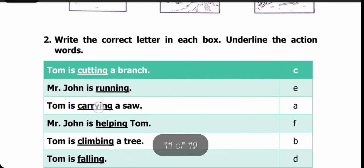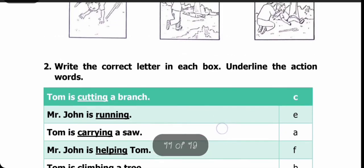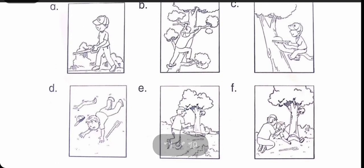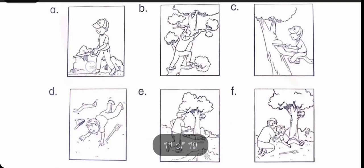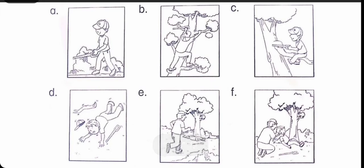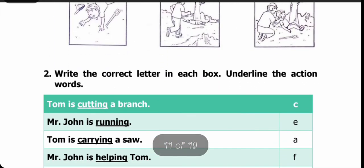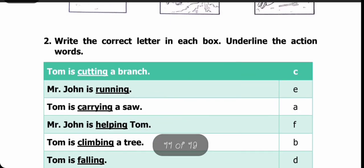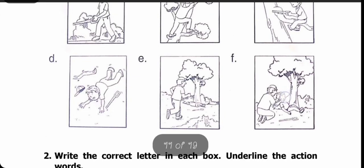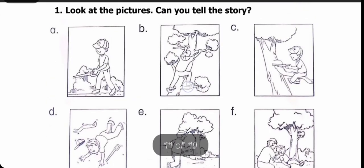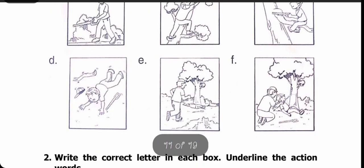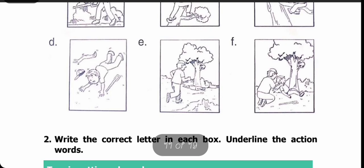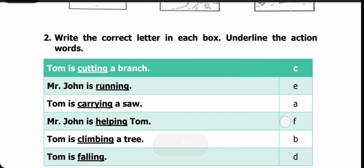Next: Tom is carrying a saw. Saw kahte hain aari ko — aur Tom aari leke ja raha hai. Hamare paas yeh A statement hai — ismein Tom ke paas saw hai aur wo leke ja raha hai. Yahaan pe hum A write kar denge. Aage hai Mr. John is helping Tom. Mr. John jahaan pe Tom ki help karte hain, wo humne picture dekhni hai. F mein hum dekh rahe hain ki Mr. John Tom ki help karte hain. Is statement ke saamne hum F write kar denge.